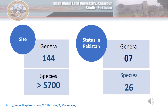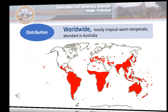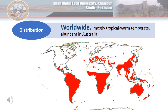Myrtaceae is a large family consisting of 144 genera and more than 5000 species worldwide. Only 26 species of 7 genera of this family are recorded in Pakistan. The members of this family are found across the world but the family is abundant in tropics, subtropics and very dominant in Australia.